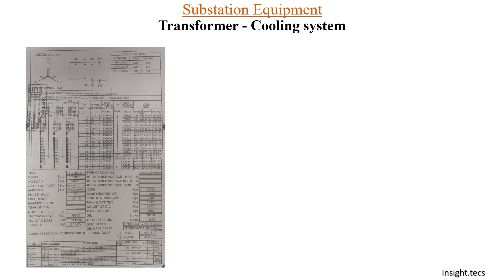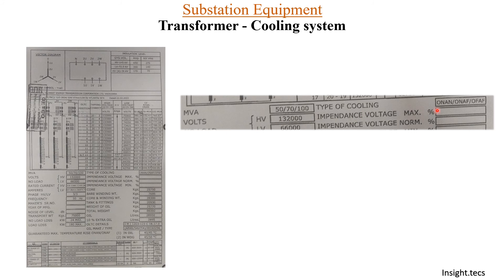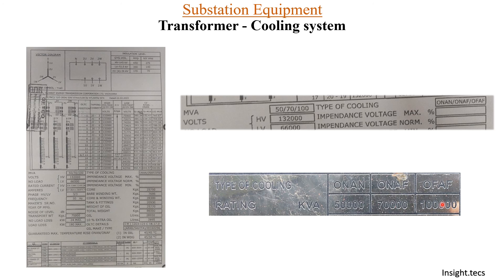Let us see a nameplate — on the nameplate you can see the type of cooling mentioned and accordingly how much MVA at what efficiency the transformer will work. Let us zoom in: the type of cooling oil natural air natural has a capacity of 50 MVA; oil natural air force improves capacity to 70 MVA; and the highest efficiency of 100 percent is achieved when using oil force air force, at which point a 100 MVA transformer works at its full 100 MVA rating. The nameplate confirms: oil natural air natural at 50 percent, oil natural air force at 70 percent, and oil force air force at 100 percent of transformer rating.